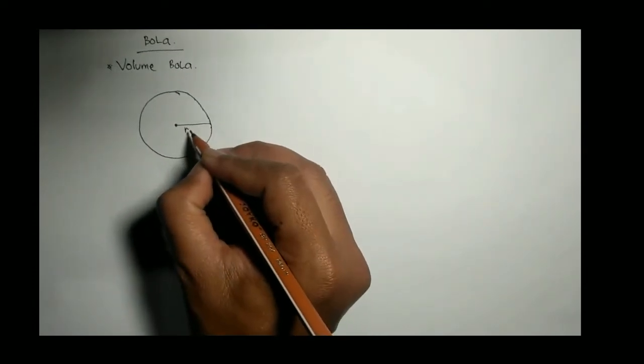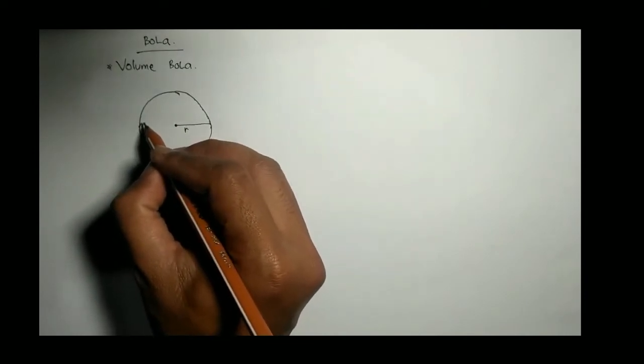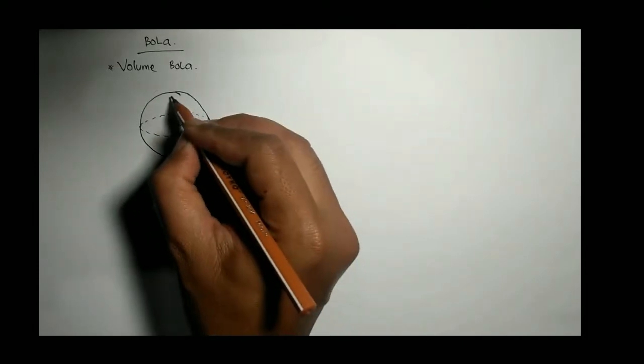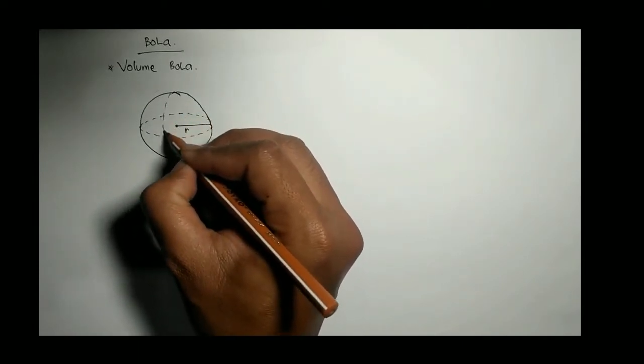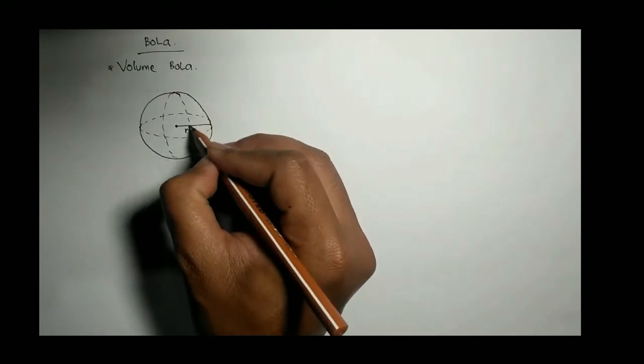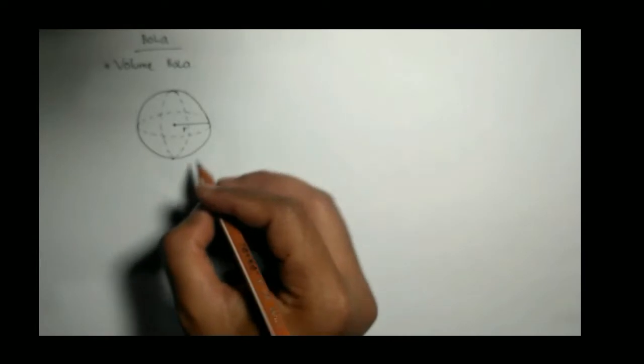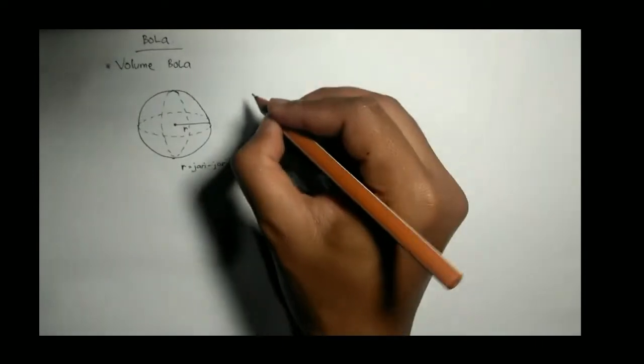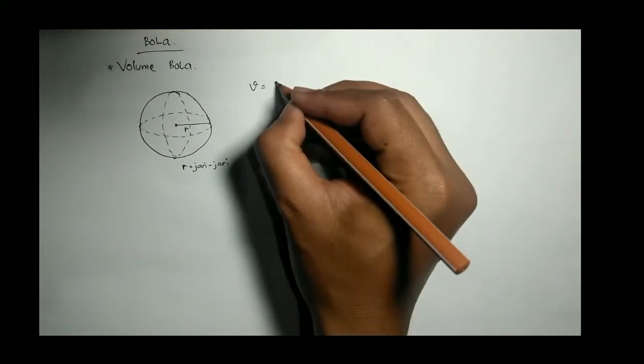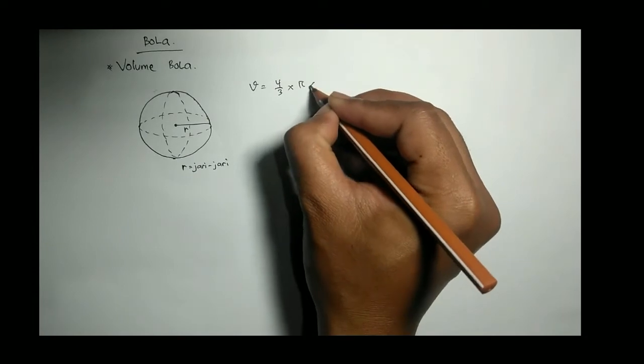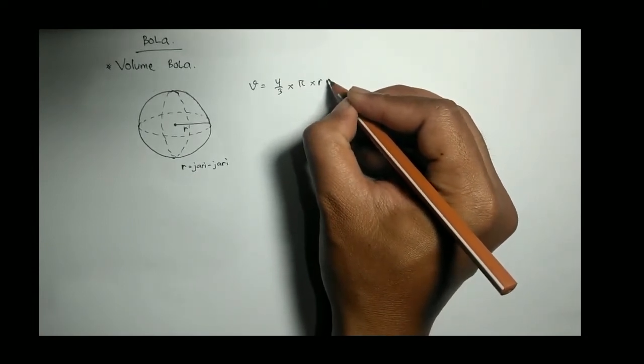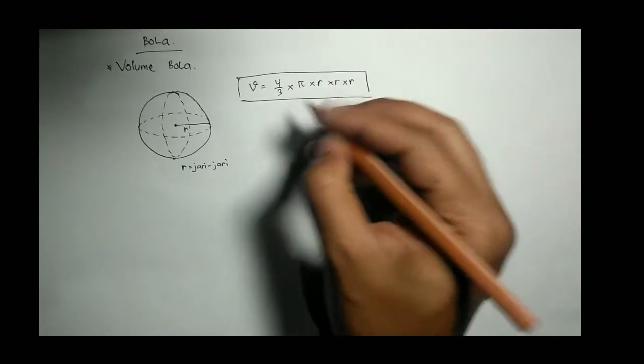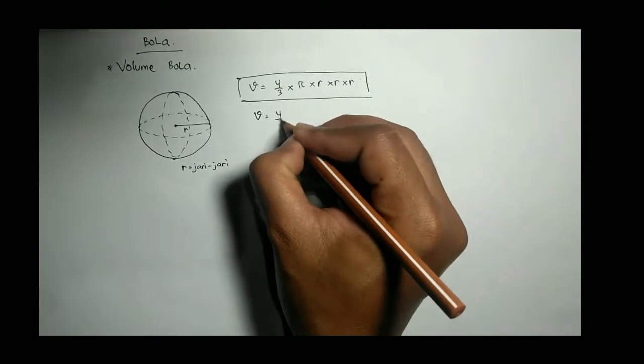Jadi sama seperti lingkaran, bola juga mempunyai unsur R atau jari-jari. Ini saya gambarkan titik-titik ini hanya untuk memudahkan membedakan dengan lingkaran, menunjukkan bahwa bola itu mempunyai ruangan karena bangun ruang, bukan bangun datar. Jadi volume bola itu langsung saja saya berikan rumus: 4/3 dikali π dikali R pangkat 3 atau R kali R kali R.